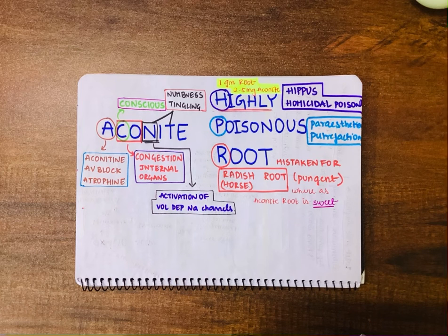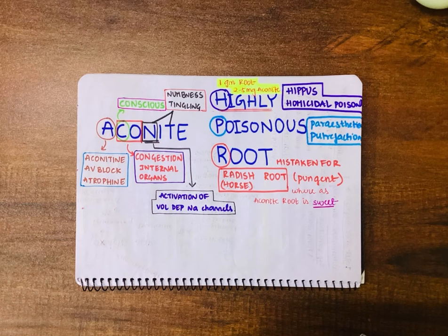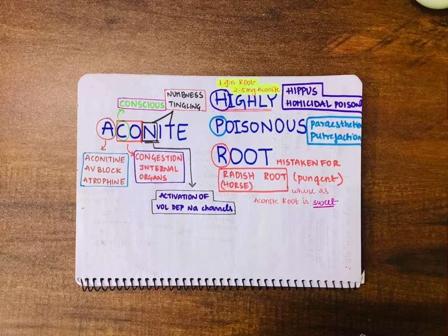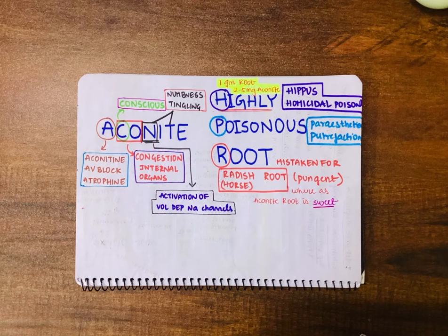H in 'highly' stands for hippos and homicidal poison. Hippos is the alternate contraction and dilatation of the pupil in the earlier stages; in later stages, there is complete dilatation. It is an ideal homicidal poison because it is cheap, easily available, has a sweet taste, can be added to alcohol or betel leaf, and cannot be detected in chemical analysis even after putrefaction.